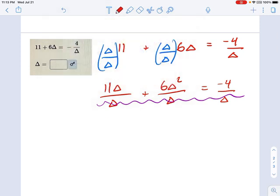And now all I have left is 11 delta plus 6 delta squared equals negative 4. And this looks like a quadratic to me, so I'm just going to rearrange it with 0 on one side. 6 delta squared plus 11 delta plus 4 equals 0.